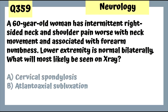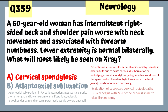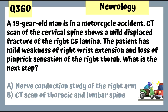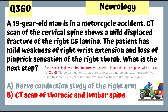Question 359: A 60-year-old woman with intermittent right-sided neck and shoulder pain worse with neck movement and associated forearm numbness, with bilateral normal extremities — cervical spondylosis is most likely seen on x-ray. Question 360: A 19-year-old in a motorcycle accident with a mild displaced C5 lamina fracture, mild right wrist extension weakness, and loss of pin-prick sensation of the right thumb — next step is CT scan of the thoracic and lumbar spine, because if you see a single vertebral fracture you must image the entire spine.